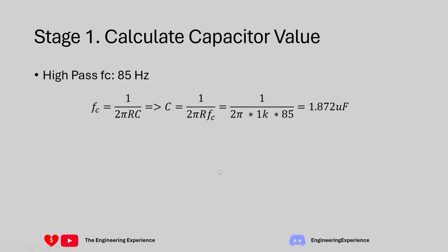We know our cutoff frequency is 85 Hz and the cutoff frequency can be calculated with the equation 1 over 2πRC. If you rearrange this equation to get C, we get capacitance equals 1 over 2πRfc. R and fc are known: R is 1 kΩ and fc is 85 Hz, which gives us a capacitance value of 1.872 µF.